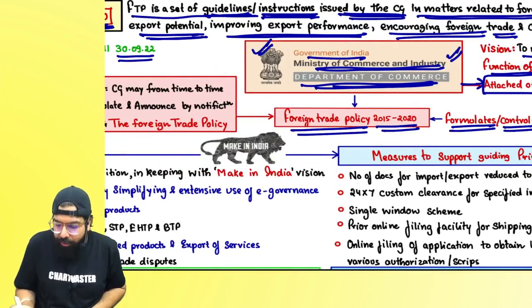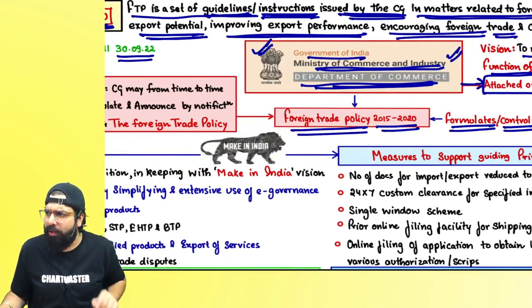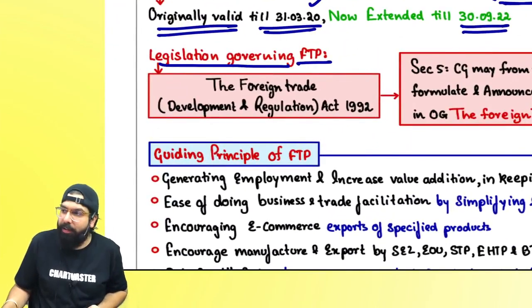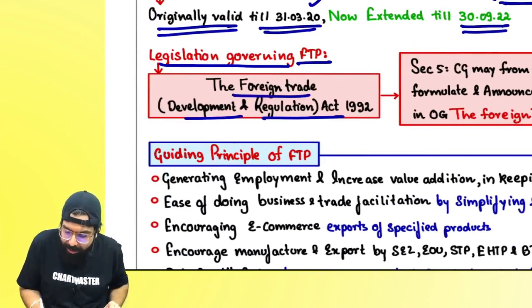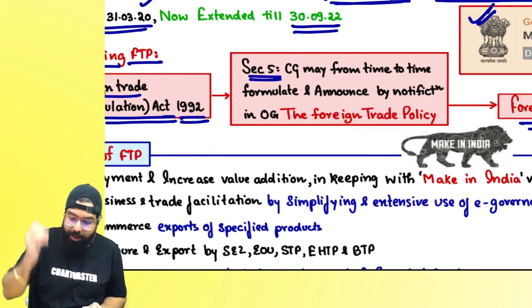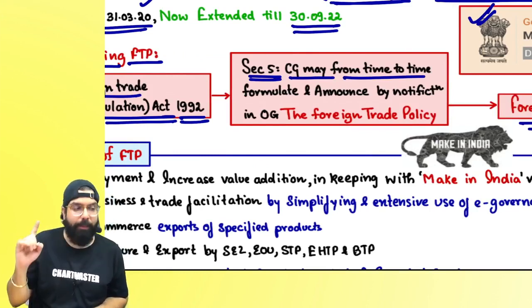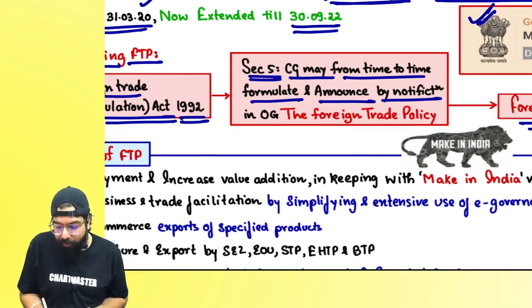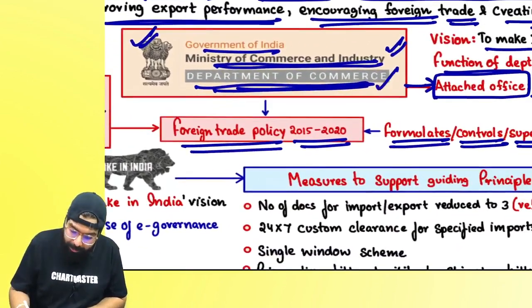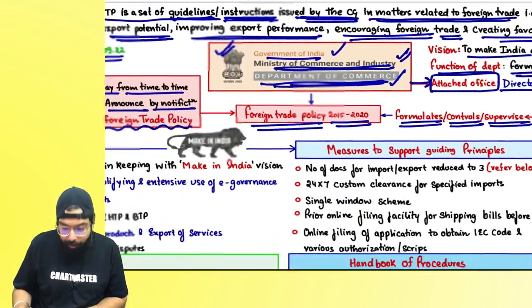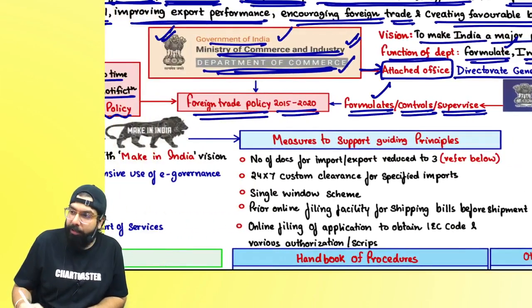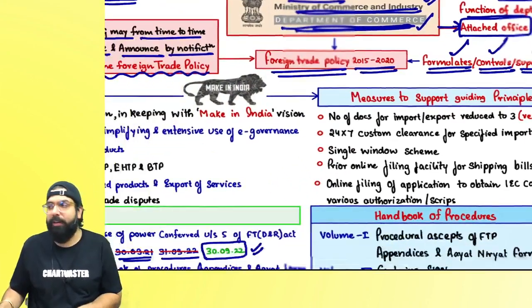The power to make foreign trade policy comes from the Foreign Trade Development and Regulation Act 1992. Section 5 of that Act gives the central government the power to formulate and announce by notification in the official gazette the foreign trade policy. The Department of Commerce, through DGFT, will formulate, control, and supervise this foreign trade policy.